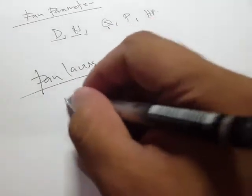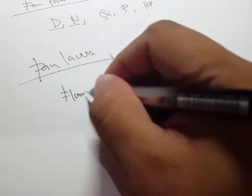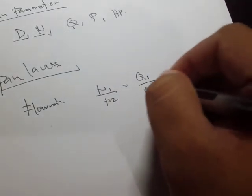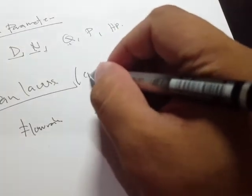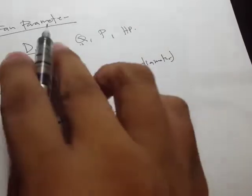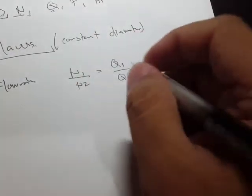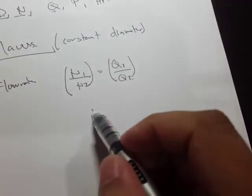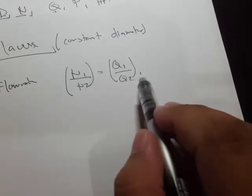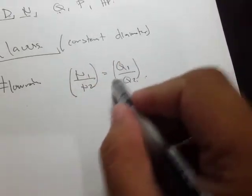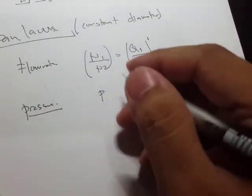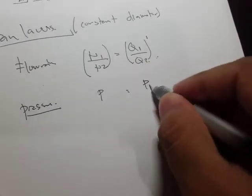In our lecture handouts, the fan laws show the effect on flow rate. We have n₁ over n₂ equals Q₁ over Q₂. Take note this is for constant diameter. There are other fan laws — for example, if we hold speed constant and change the diameter. The relationship of speed to flow rate is just linear, meaning if I double the speed, I also double the flow rate. So that relationship is raised to degree 1.